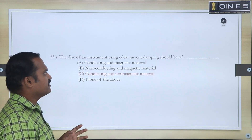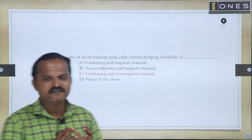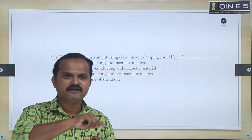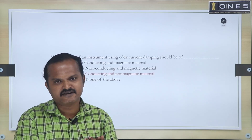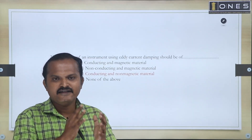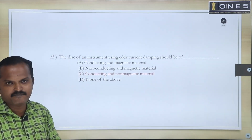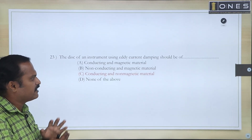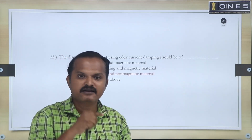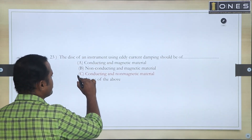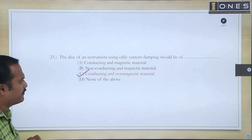Next question: The disk of an instrument using eddy current damping should be made of what material? For eddy current damping, we need a closed circulating path for current flow and closed current generation to provide damping. The first condition is that the material must be conducting. That material should be non-magnetic type and conducting, so current passage is possible. So the answer: it should be conducting as well as non-magnetic material for eddy current damping to be possible.